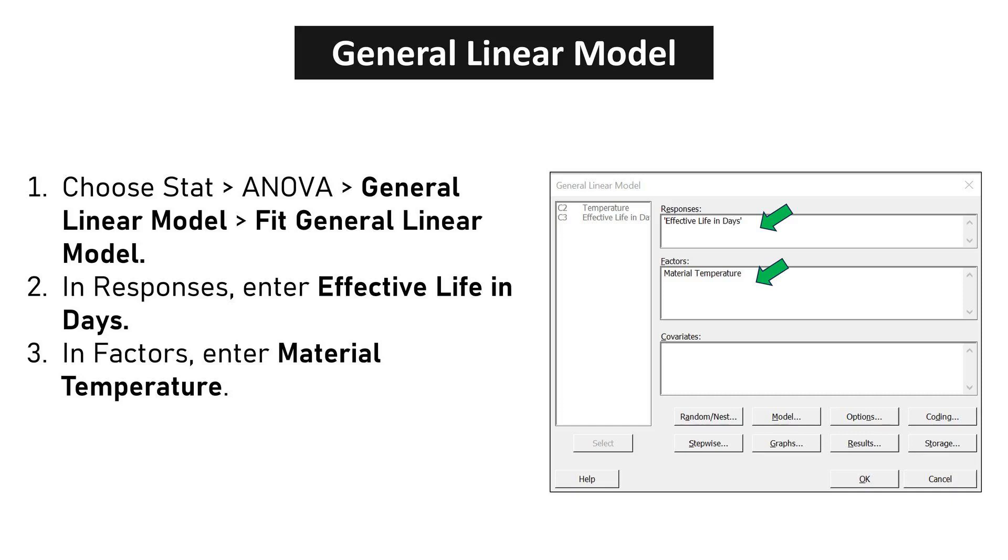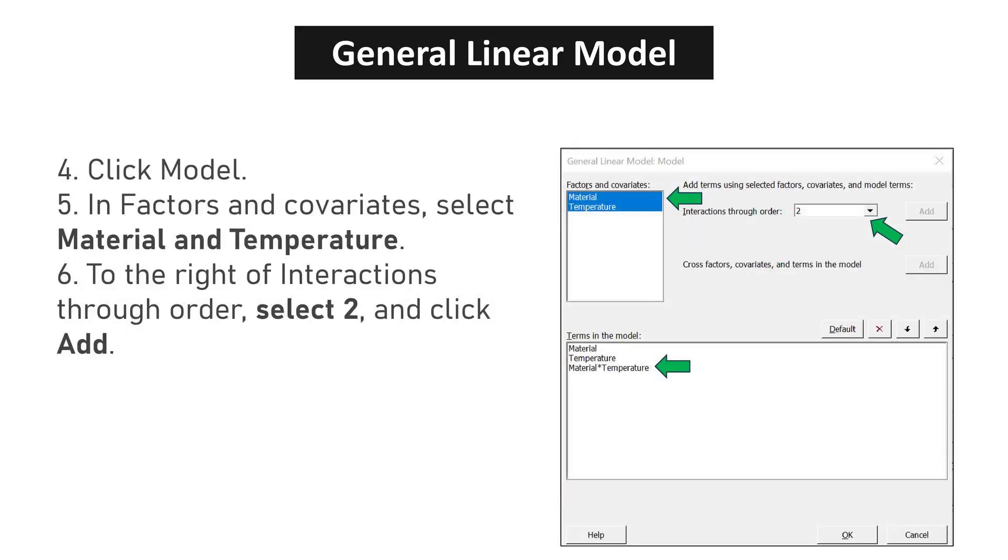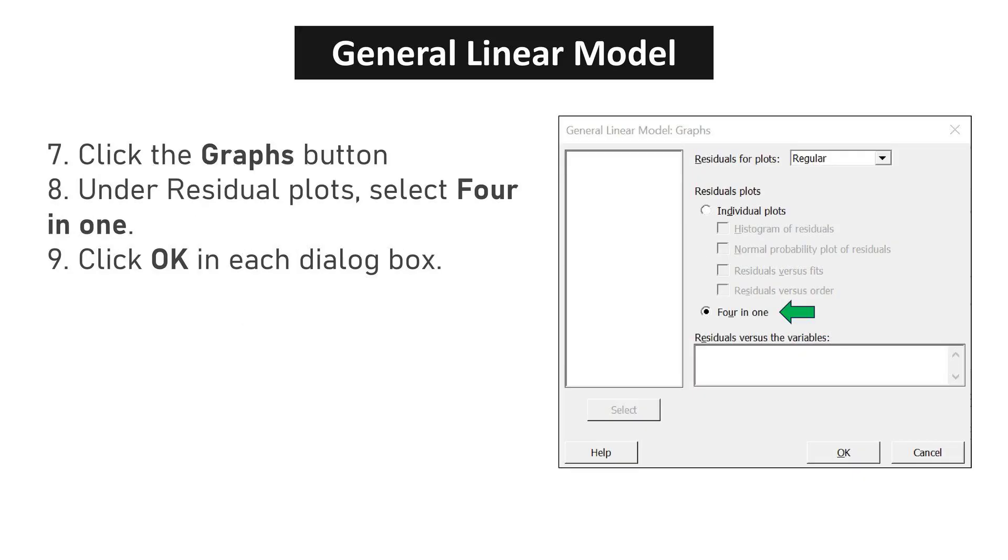Choose STAT, ANOVA, General Linear Model, Fit General Linear Model. In Responses, enter effective life in days. In Factors, enter material temperature. Click Model. In Factors and Covariates, select material and temperature. To the right of Interactions through Order, select 2, and click Add. Click the Graphs button. Under Residual Plots, select 4 in 1. Click OK in each dialog box.